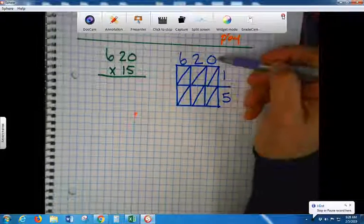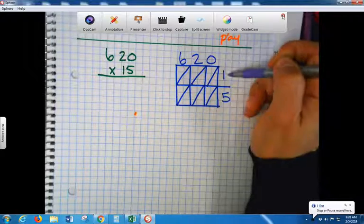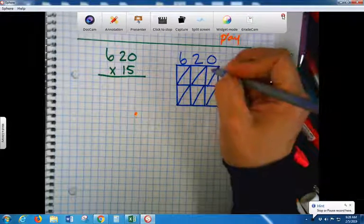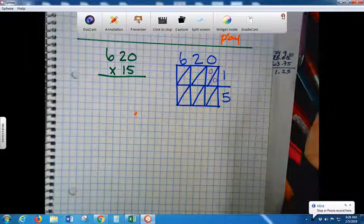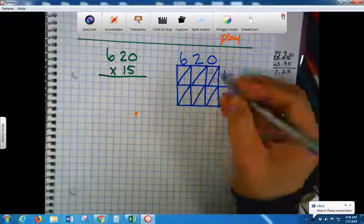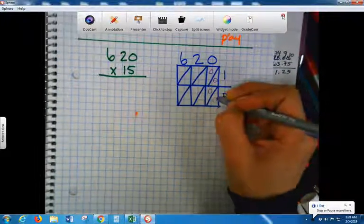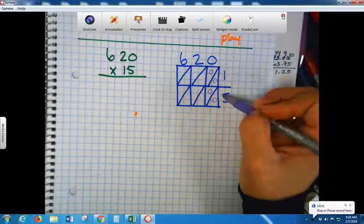It's called the lattice way of multiplying. The generic rectangle you also learned in 6th grade. I'll show you that in a second. So we divide it up, but this is what's different. You divide each of these in half on a diagonal. So instead of doing it this way, you're doing it this way.